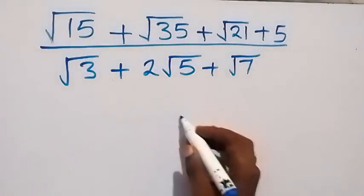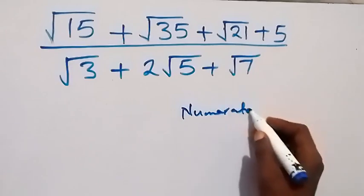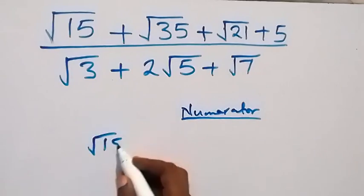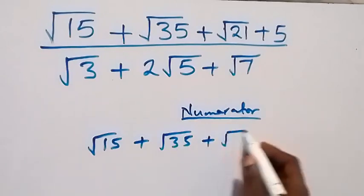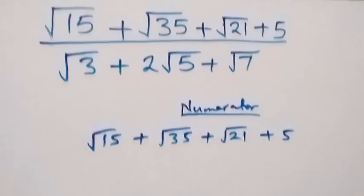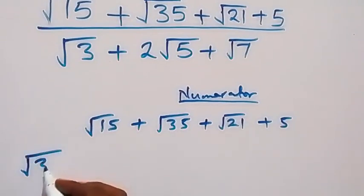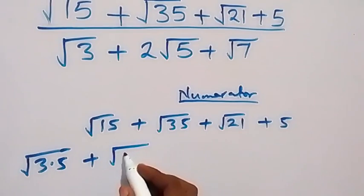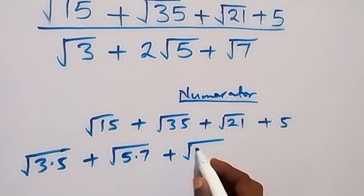Let's work with the numerator first. On the numerator, we can simplify that. We have root 15 plus root 35 plus root 21, then plus 5. We can write root 15 as root 3 times 5, then plus root 35 as 5 times 7, and then plus root 21, that's 3 times 7.